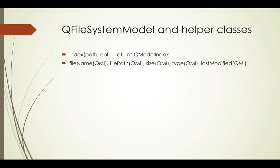Once we have a QModelIndex, we can use it to get the file's name, path, size, type, the last date it was modified, and things like that. We can also use it to create a new directory — the QModelIndex must reference a valid directory, and then you can make a subdirectory by passing it the QModelIndex of the parent directory and the name of the new directory. You can also remove a directory or file by passing the QModelIndex of the target to the appropriate method.